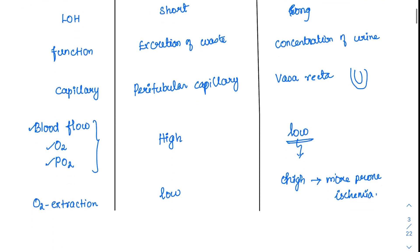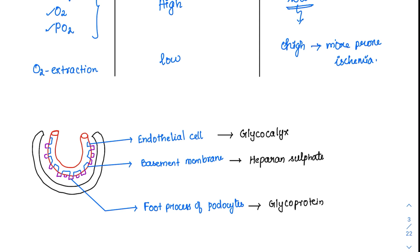Now coming to the important filtration barrier. Filtration happens from the glomerulus into the Bowman's capsule through this barrier, which has various structures to remember. Starting with the vessel, the endothelial cells have glycocalyx, which is negatively charged. Immediately below the endothelium is the basement membrane, which contains heparan sulfate.